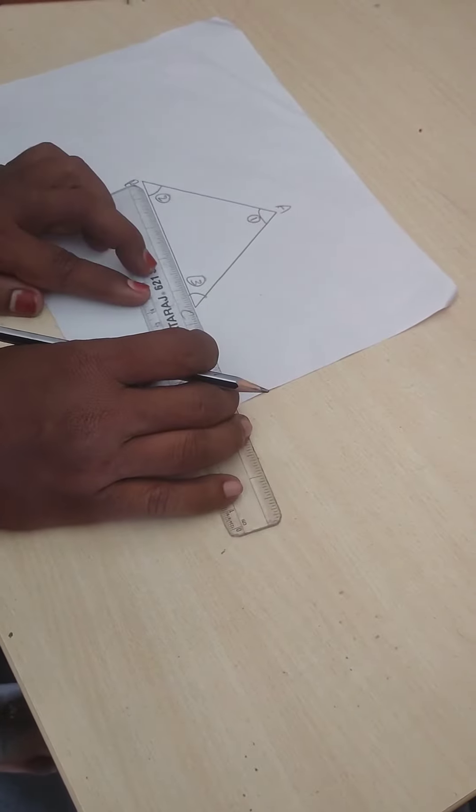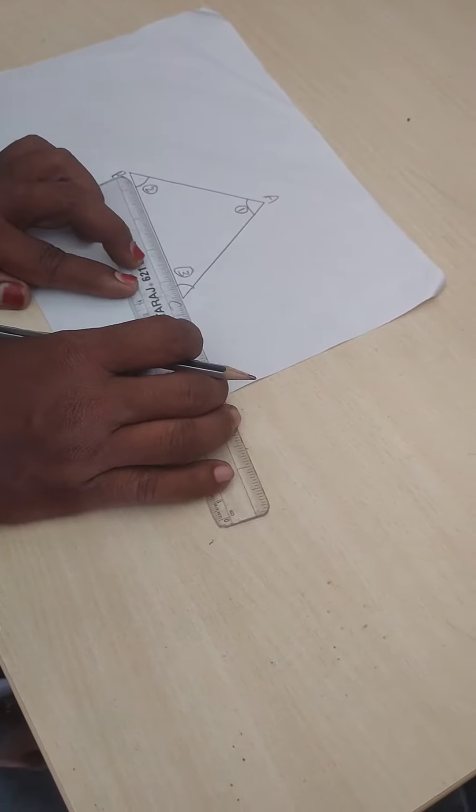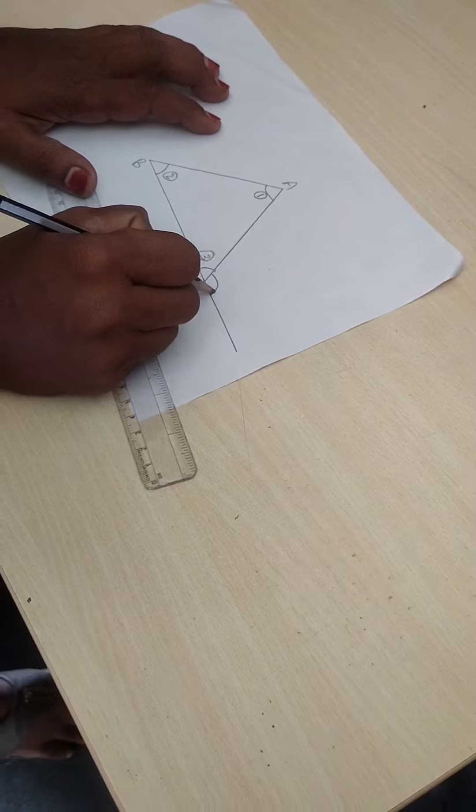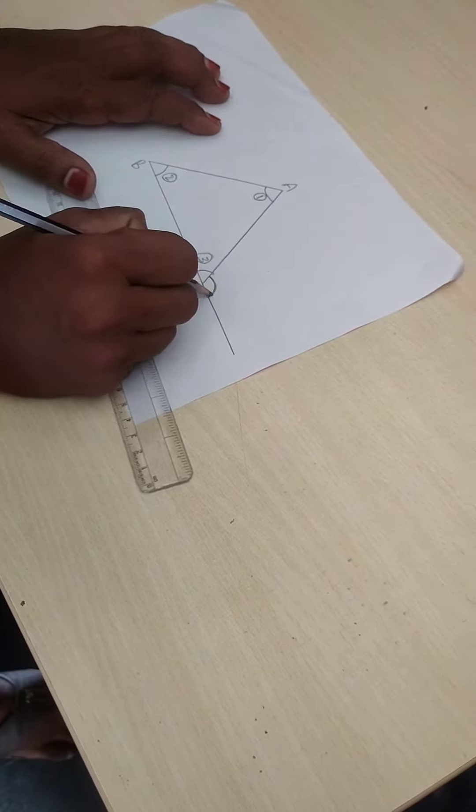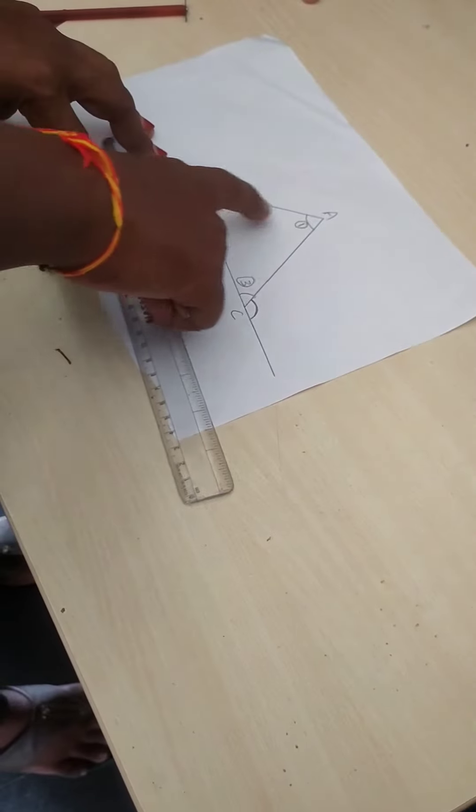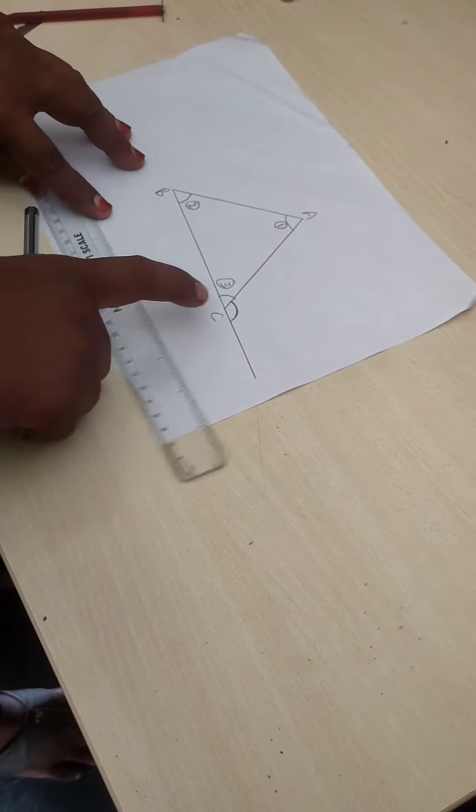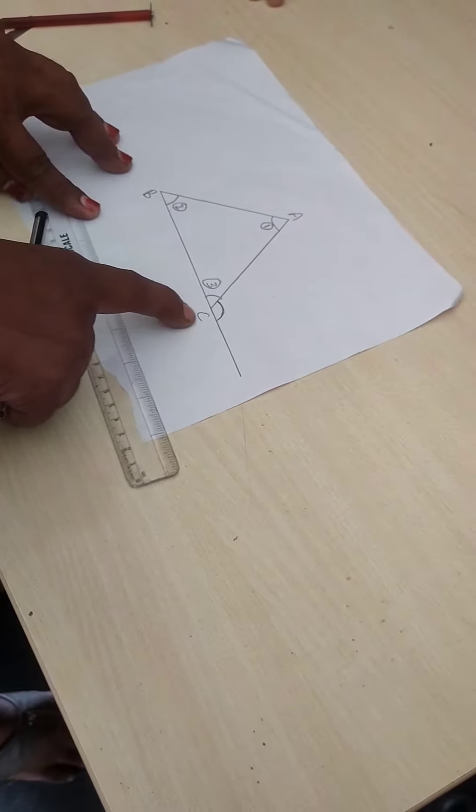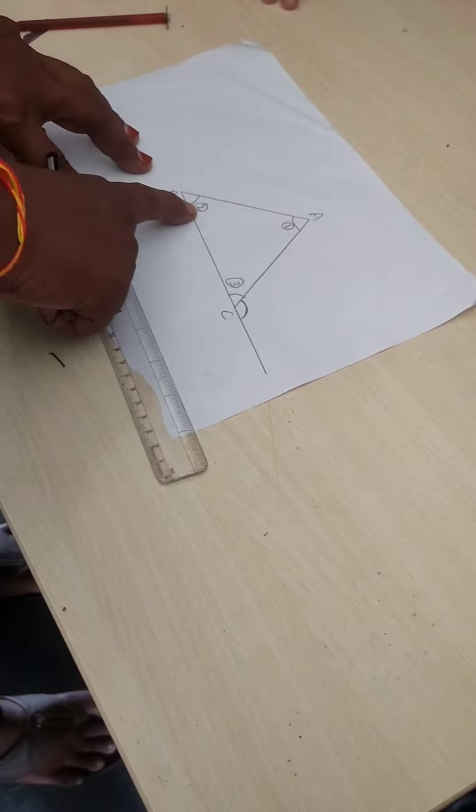Now, extend BC. This is an exterior angle at C. This exterior angle is equal to sum of its two interior opposite angles. So exterior angle C is equal to angle 1 and angle 2.